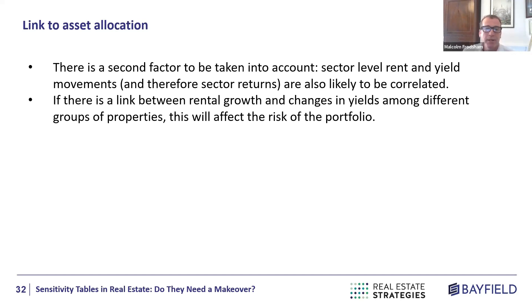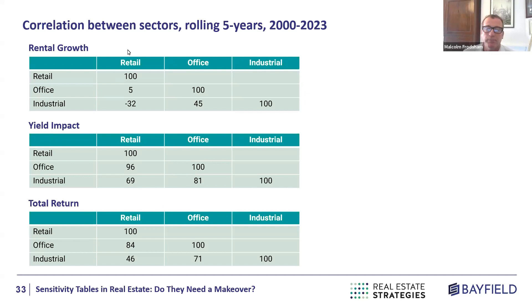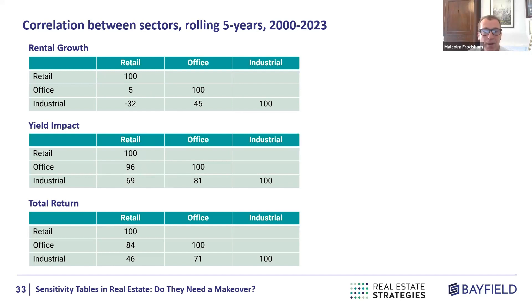Switching to histograms also allows us to look at correlations not just between rental growth and yields within a single property, but across groups of properties. In a classic correlation table, rental growth correlations across sectors are actually negative — because over the last 20 years the rise of internet shopping has driven strong industrial rental growth and weak retail rental growth. But yield correlations across sectors are very high, because interest rates are a major component of real estate yields.